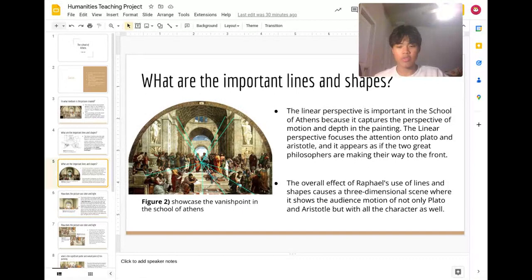This can be seen in Figure 2, which showcases the vanishing point in the School of Athens. The vanishing point is located right between Aristotle and Plato.